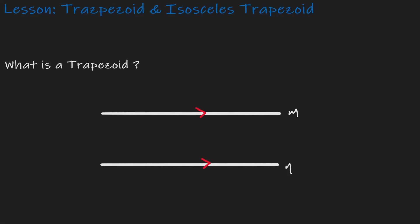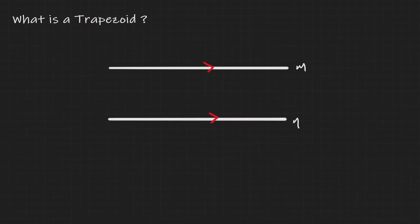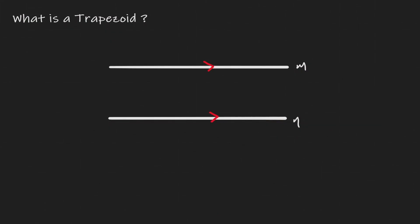Welcome. Today we'll discuss trapezoids and isosceles trapezoids. So what is a trapezoid? For that, let's consider two parallel lines, which are M and N.